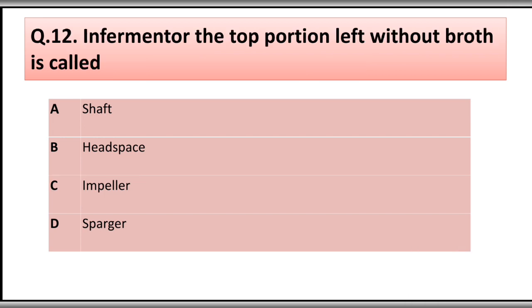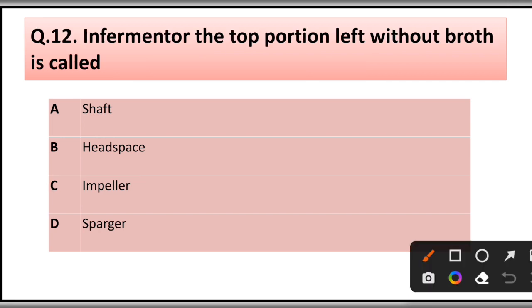Question number twelve: In a fermenter, the top portion left without growth medium is called: A) shaft, B) headspace, C) impeller, D) sparger. The correct answer is option B, headspace.